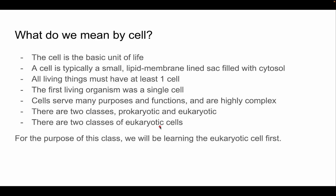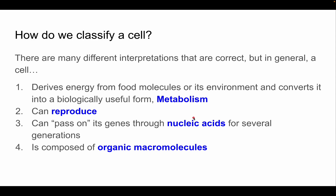For this intro lecture we'll focus on eukaryotic cells. How do we classify a cell? There are many interpretations, but in general: one, a cell derives energy from food molecules or its environment and converts it into a biologically useful form — we call this metabolism; two, it can reproduce; three, it can pass on its genes through nucleic acids for several generations; and four, it's composed of organic macromolecules containing carbon.